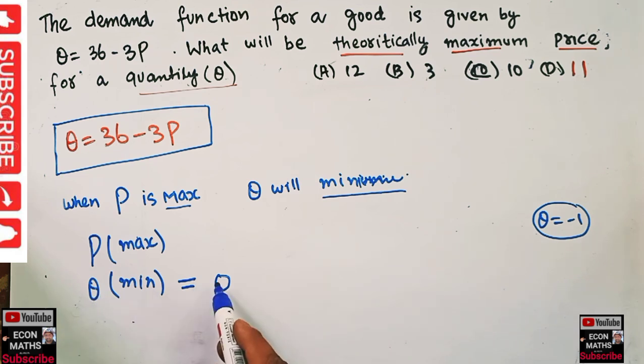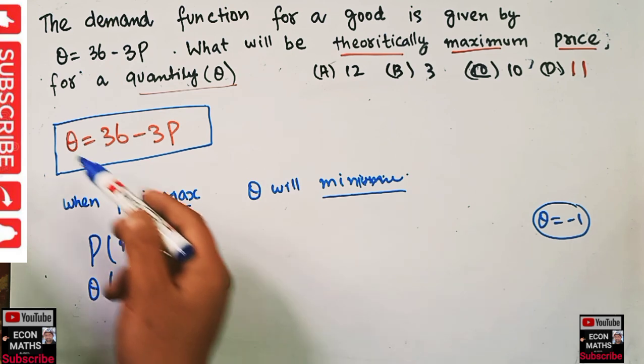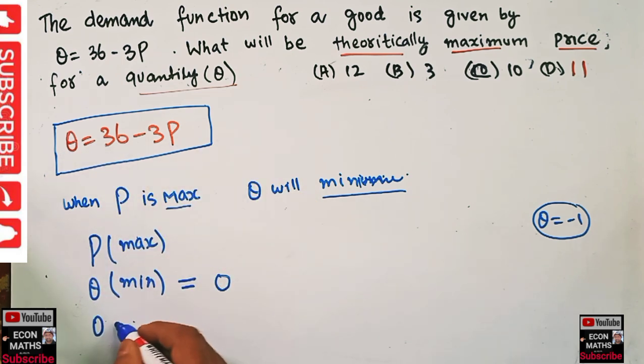When Q = 0, our price will be maximum. Simple. Now just plug Q = 0 in this equation. So we have 0 = 36 - 3P, or 3P = 36.